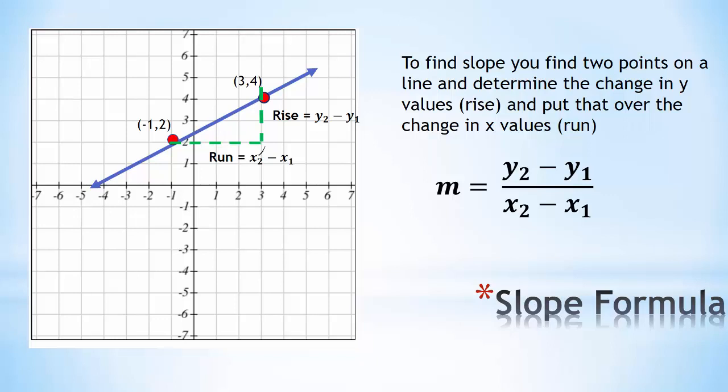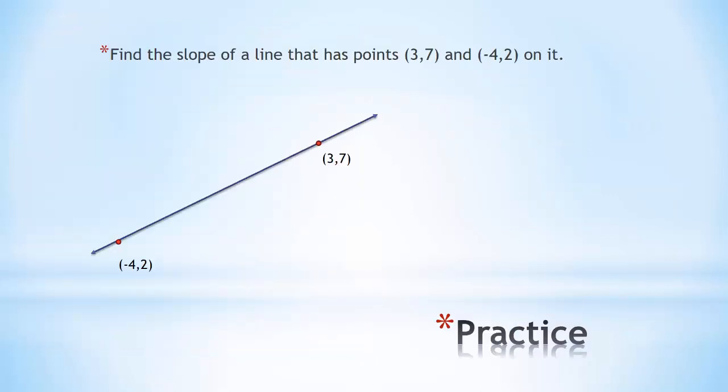Let's find the slope of a line that has points (3,7) and (-4,2) on it. What we're going to do is take the y values, 7 minus 2, over the x values of 3 minus -4. Be very careful when you're subtracting a negative because 3 minus a -4 becomes positive 4.